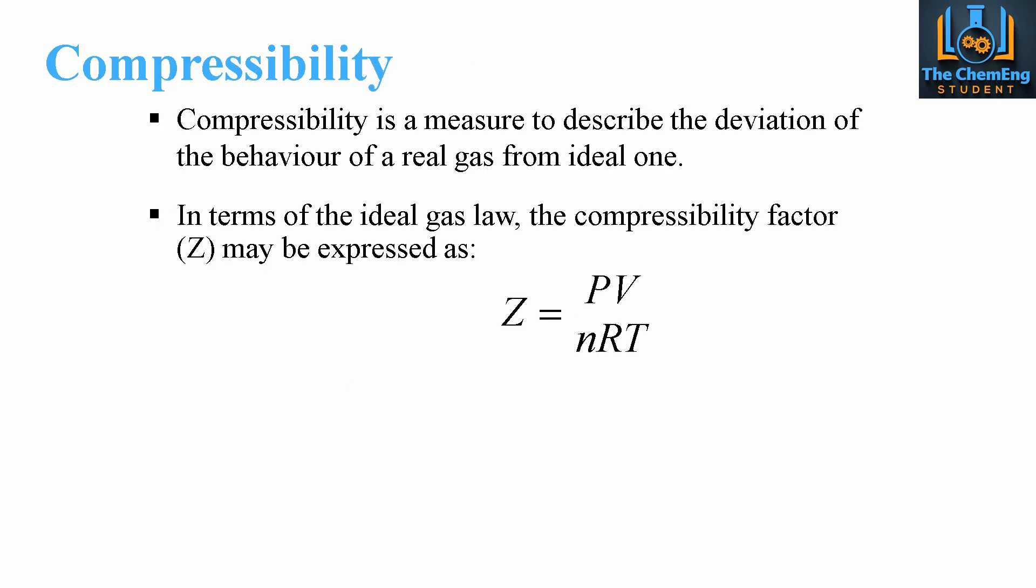Now the compressibility is a measurement described of the deviation of the behaviour of a real gas from an ideal one. And what we can express this as is the compressibility factor Z. Now this is in terms of an ideal gas. So Z is equal to the pressure of the system, the volume, divided by the moles, multiplied by the universal gas constant, multiplied by the temperature of the system.